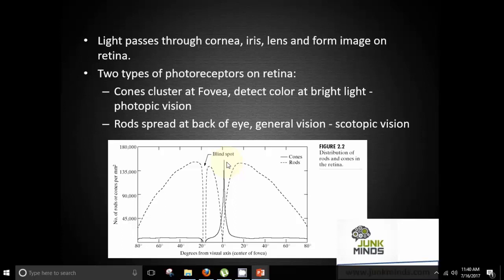Talking about the photopic vision, there are cones which cluster at fovea. They detect color at bright light. Whereas talking about scotopic vision, there are rods which spread at back of eye which is general vision. Here you can see this is basically a graph of the distribution of rods and cones in the retina. The solid line you can see here are the cones and the dotted line are the rods. This is the blind spot which is shown in the picture.